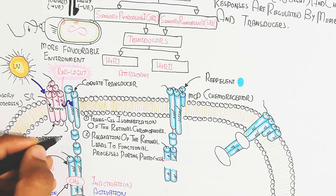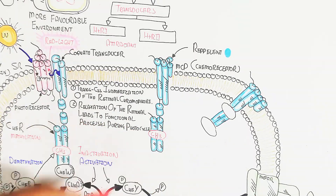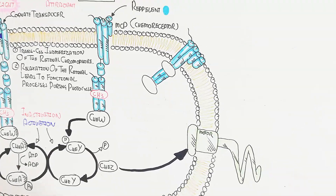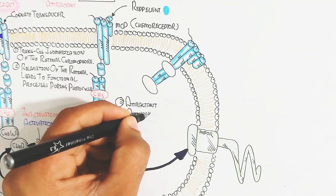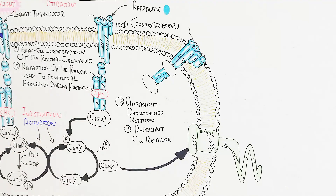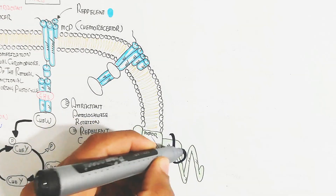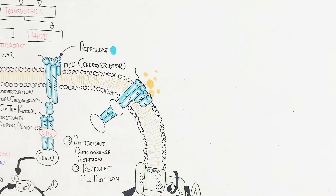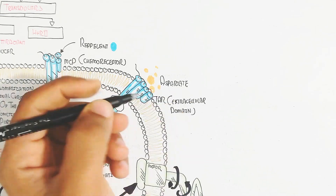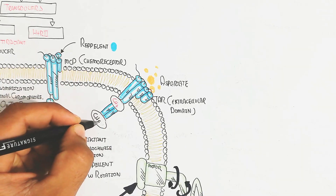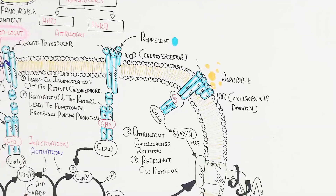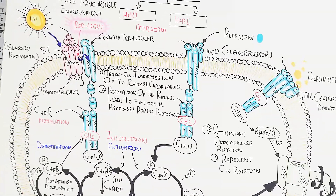For repellent behavior, demethylation leads to activation and the MCP chemoreceptor leads to CheW activation, resulting in clockwise rotation of the flagella. Attractant behavior produces anticlockwise rotation. Clockwise means repellent behavior; anticlockwise means attractant behavior. For example, aspartate as a chemical binds with TAR — the extracellular domain of the receptor — leading to demethylation, CheW activation, CheY activation, and ultimately positive chemotactic movement.